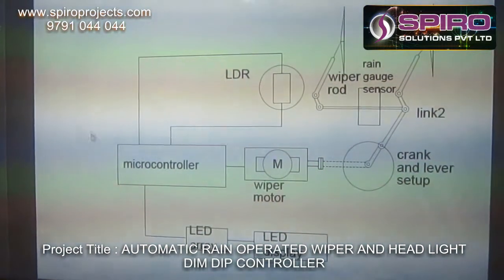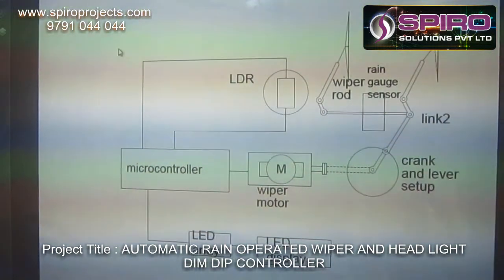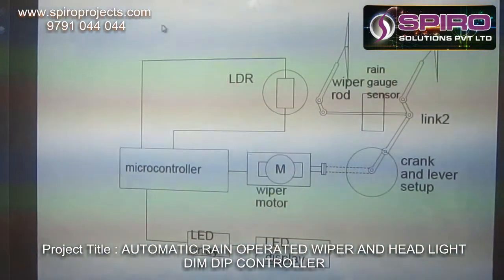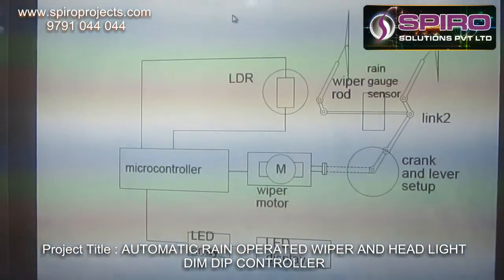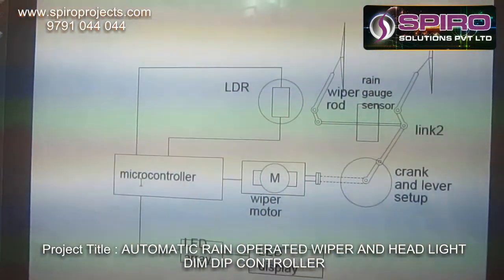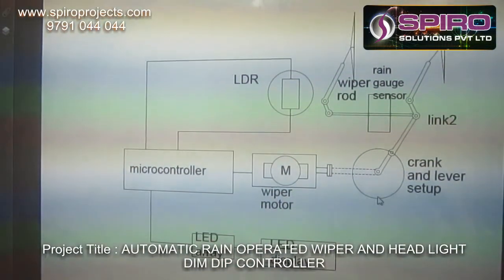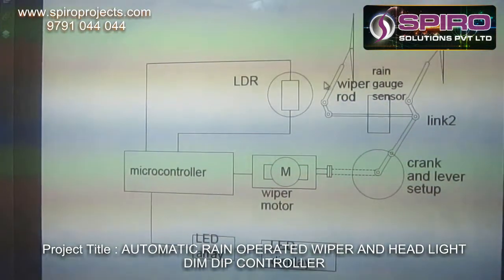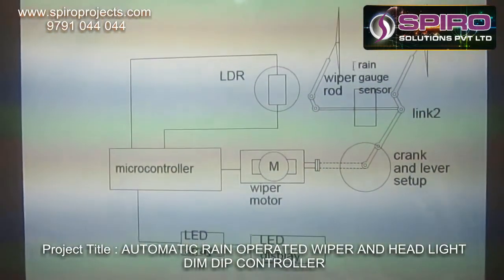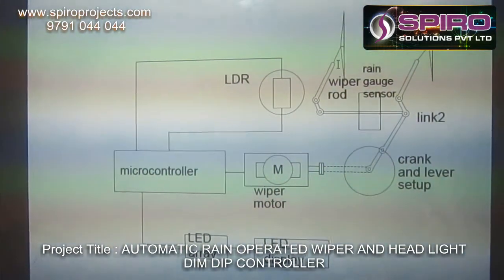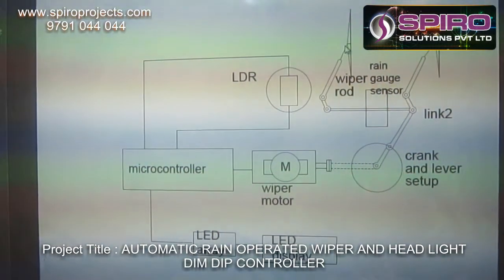When the rain sensor is fixed on the windscreen, during the rainy season, the rain sensor is activated. The rain sensor gives the signal to the Microcontroller. The Microcontroller will activate the wiper motor. The wiper motor activates the crank and lever mechanism. The crank and lever mechanism is used to convert the rotary motion into linear motion, which is then converted into wiper rod movement.